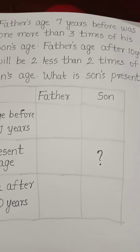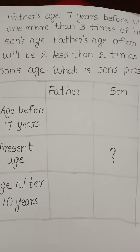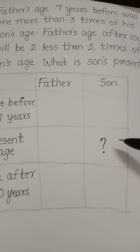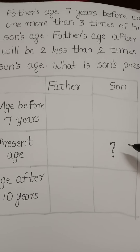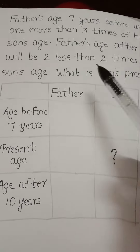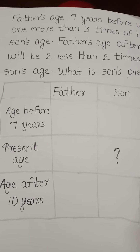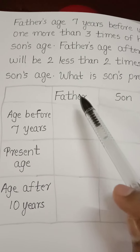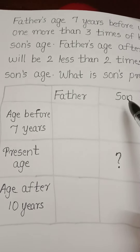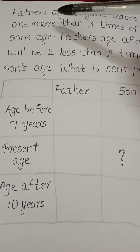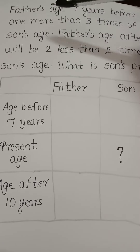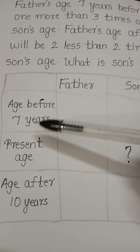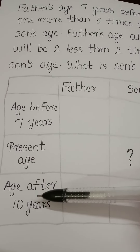What is son's present age? We are going to find the age of the son. We will set up the problem by considering: 3 times of his age 7 years before, the present age, and the age after 10 years.